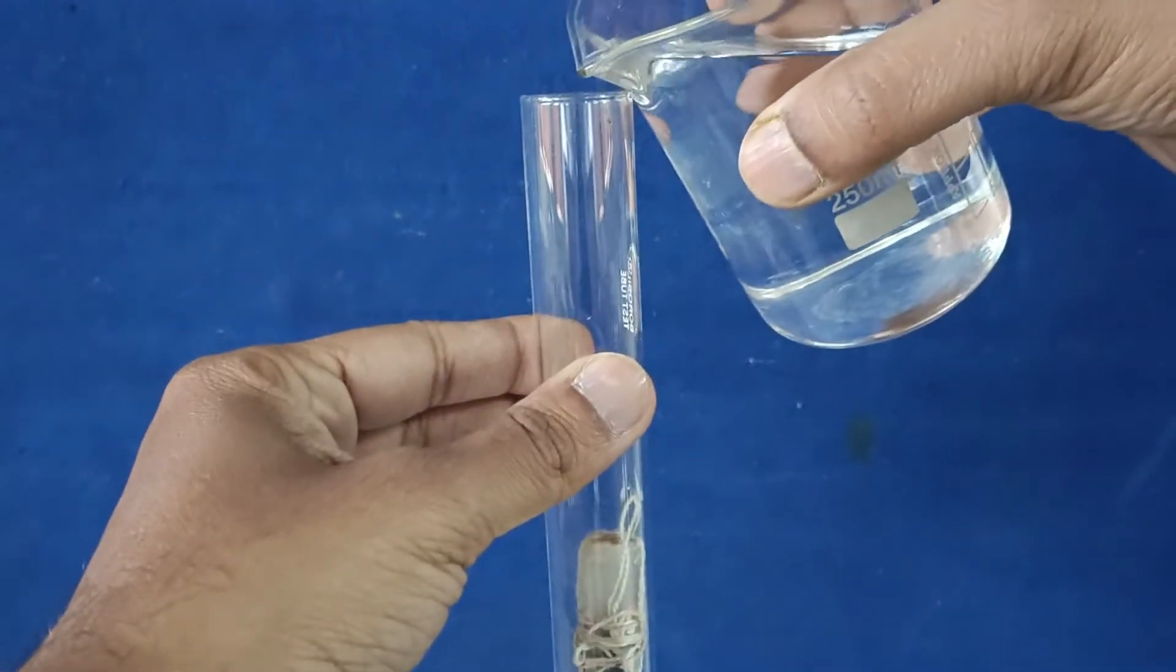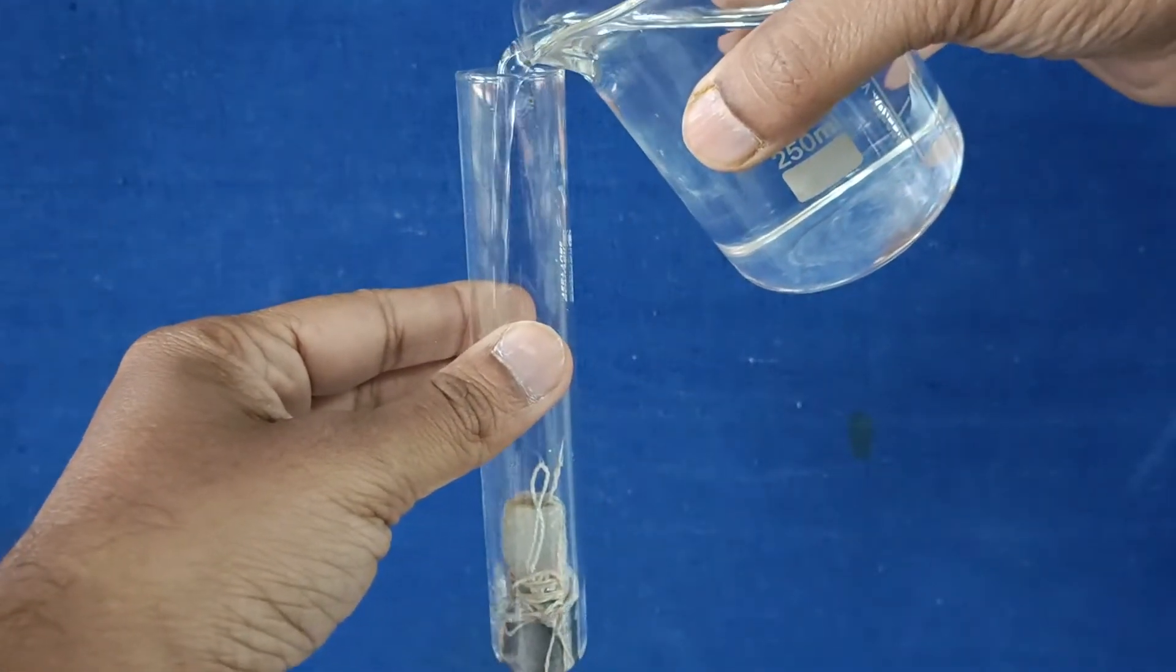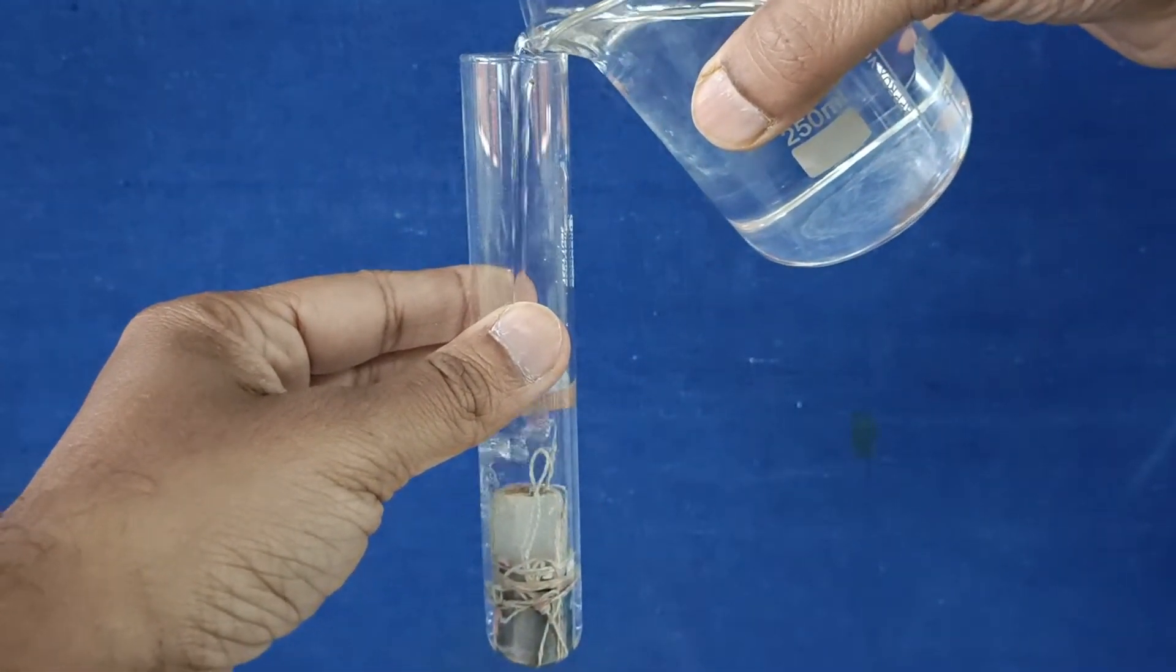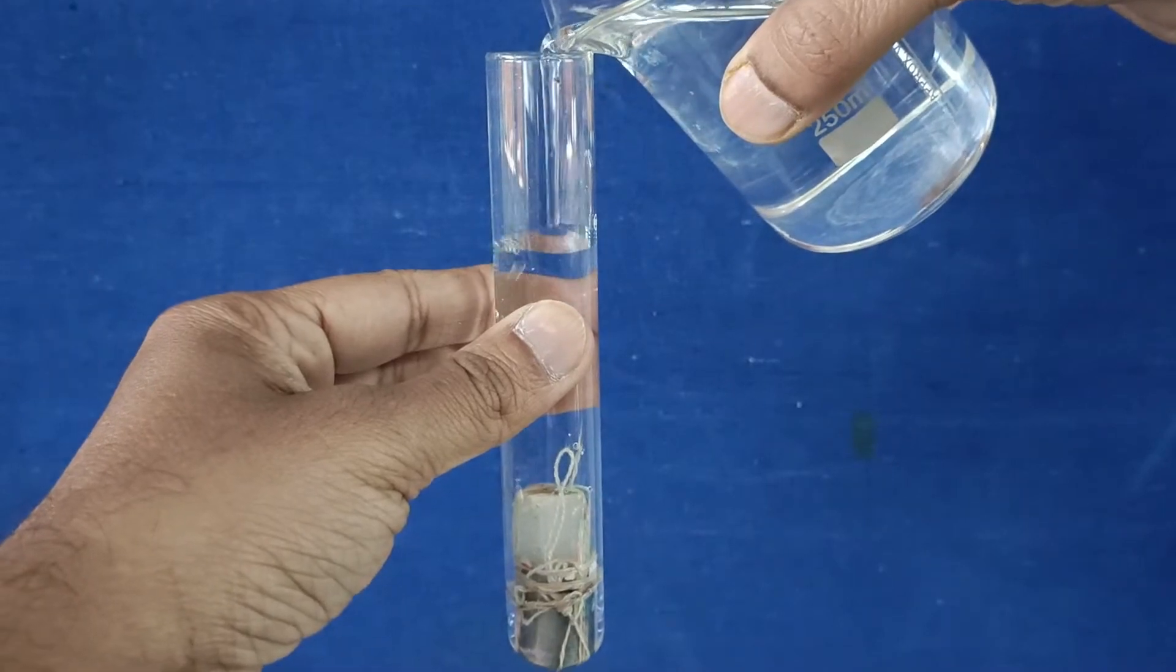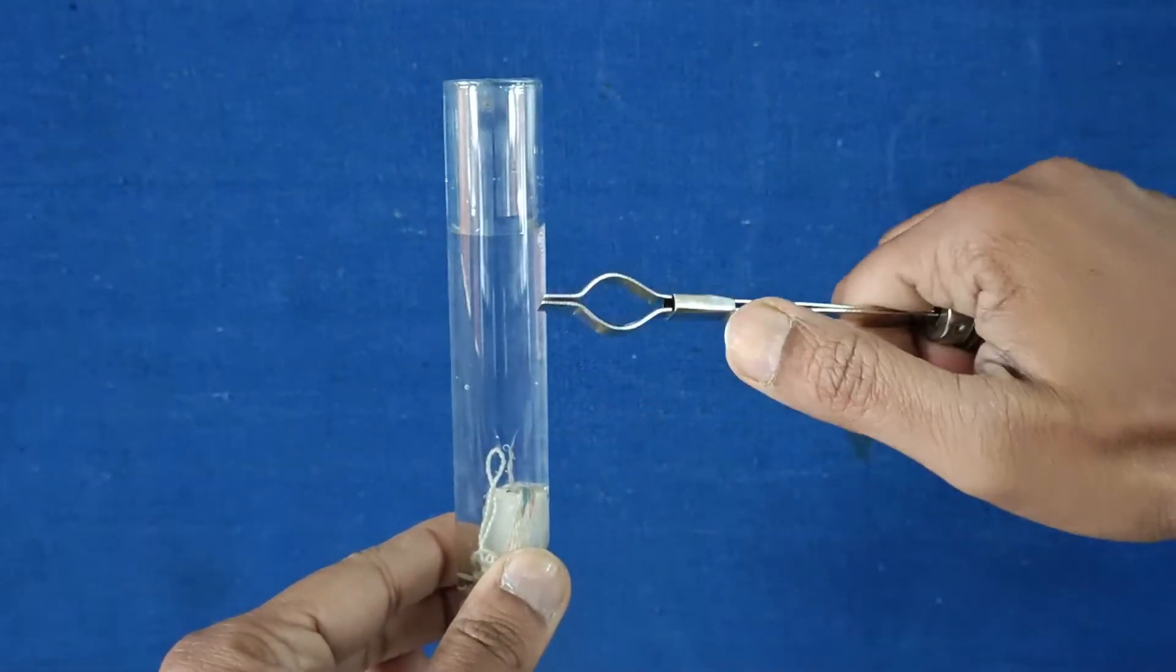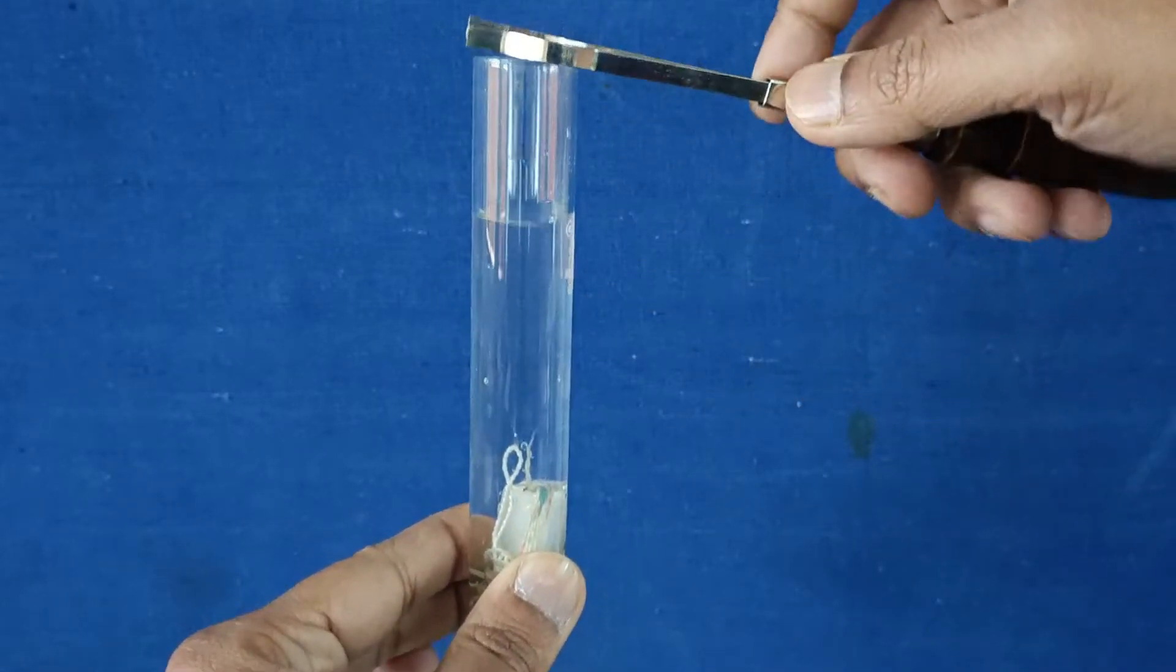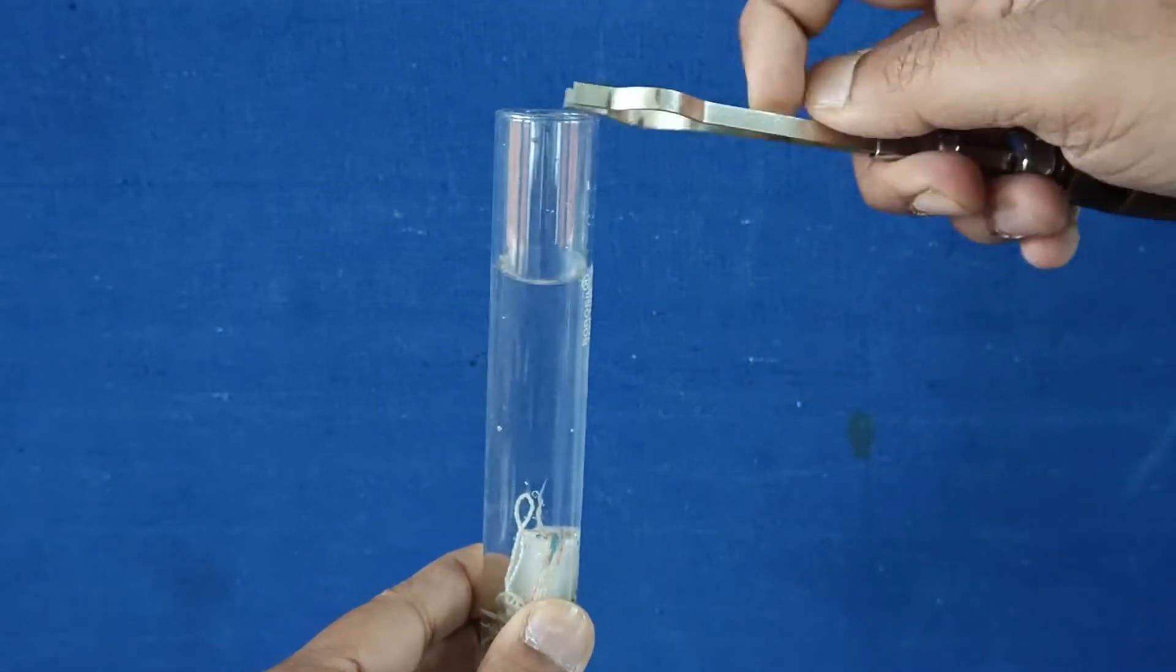Adding water in the test tube till it occupies about three-fourths of the volume of the test tube. Fix the test tube holder for safety purposes as we are going to heat it over the Bunsen burner.